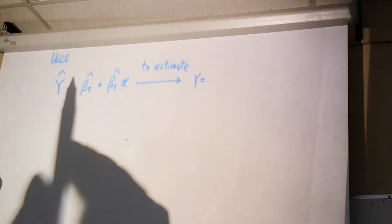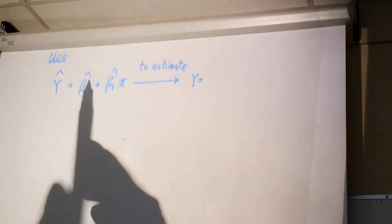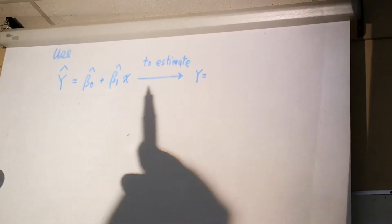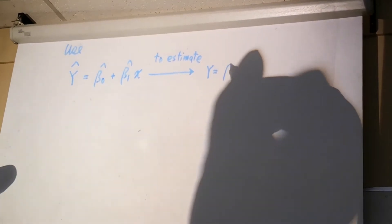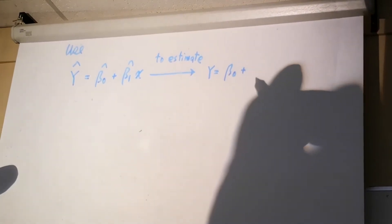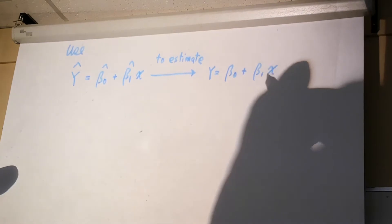We use ŷ = β̂₀ + β̂₁x to estimate what? β₀ + β₁x.